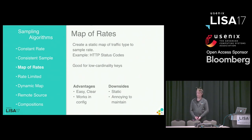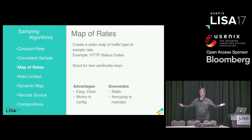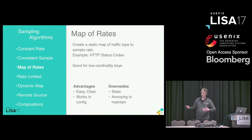Without adding very much actual logic to any of the applications, you suddenly have gotten rid of the biggest downside that people complain about when they think about sampling. When somebody gets an error, I need to know about it so I can't sample. Well, you can. You just need to use whether or not it's an error to influence whether or not you're choosing to sample that event.